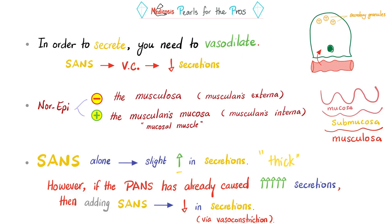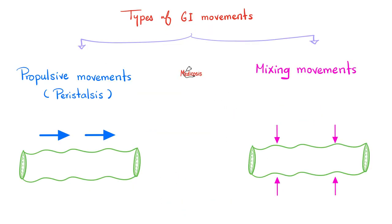Norepinephrine decreases motility and secretion. When it comes to the muscularis externa (the big muscle layer), norepinephrine inhibits it — no surprise. But here's the surprising part: norepinephrine can actually boost the muscularis mucosa, which is the thin layer of muscles in the mucosa, also known as muscularis interna or mucosal muscle.